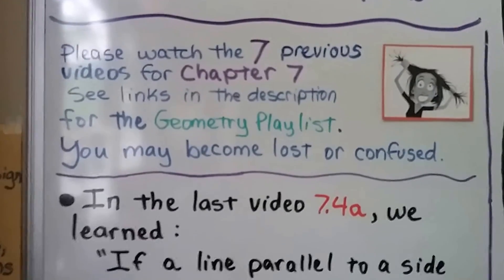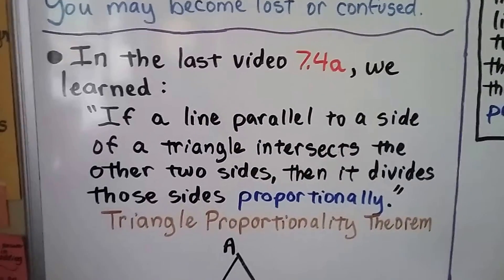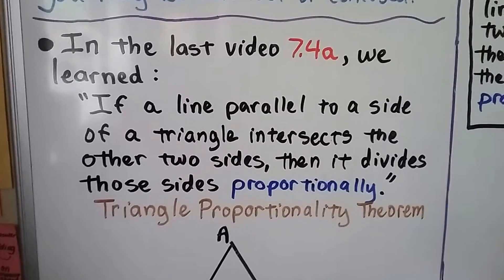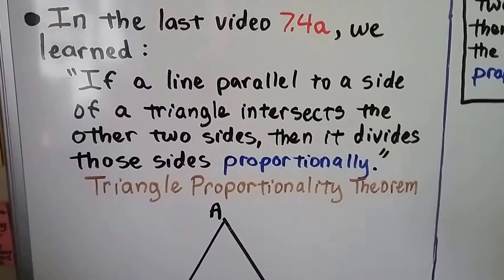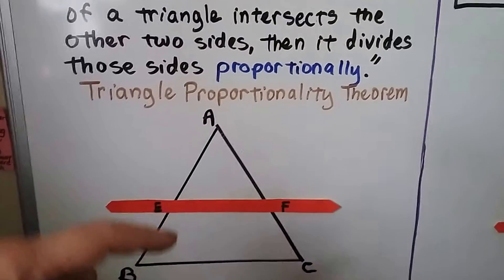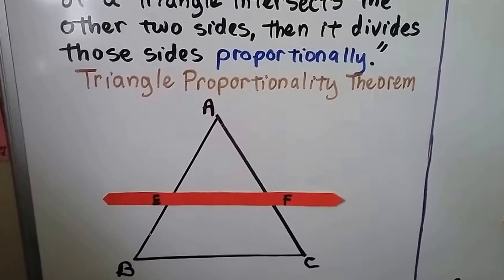We have seven previous videos for chapter 7 that are in the geometry playlist if you need them. So in the last video, 7.4a, we learned if a line parallel to a side of a triangle intersects the other two sides, then it divides those sides proportionally. That was the triangle proportionality theorem.